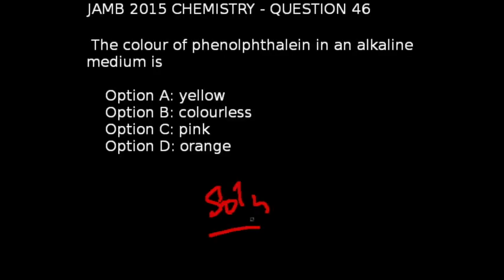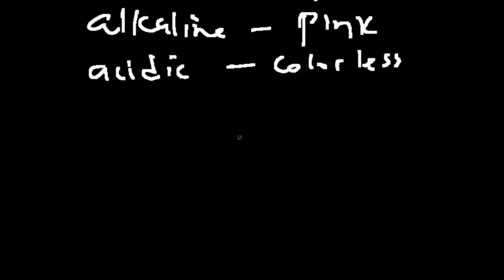Question 46 of JAM 2015 chemistry exams: The color of phenolphthalein in an alkaline medium is — the correct answer is option C, which is pink. A simple way to remember: in an alkaline medium the color of phenolphthalein is pink, and in an acidic medium it is colorless.